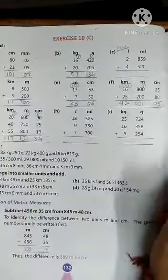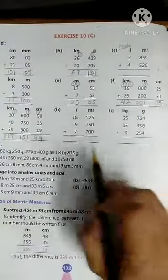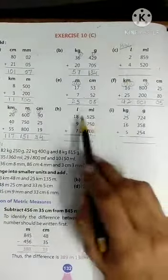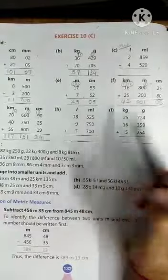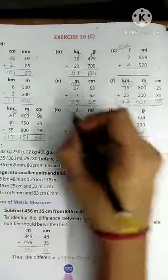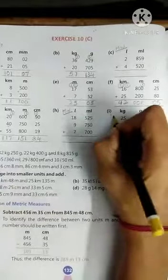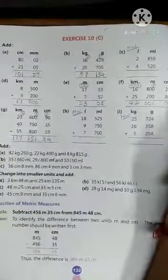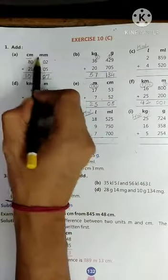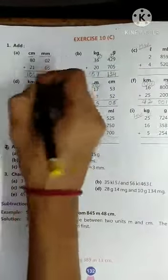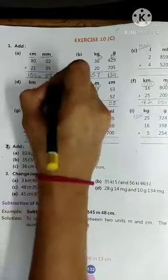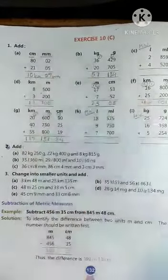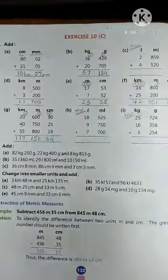Now H and I, these three you have to do yourself at home, homework. Clear everyone? And we can write 101 centimeter and 07 millimeter. Clear everyone? Okay. Thank you children.